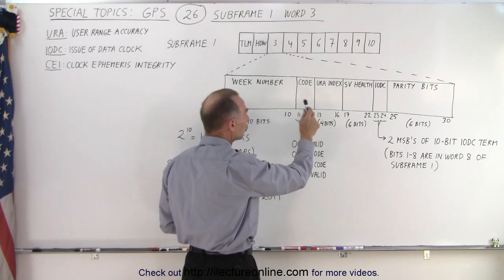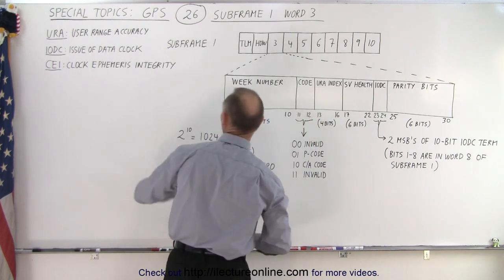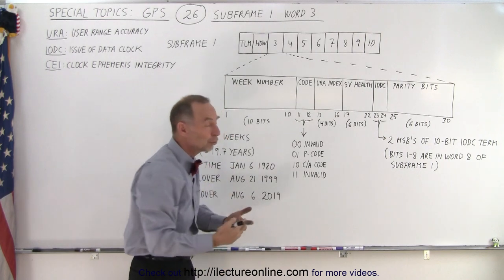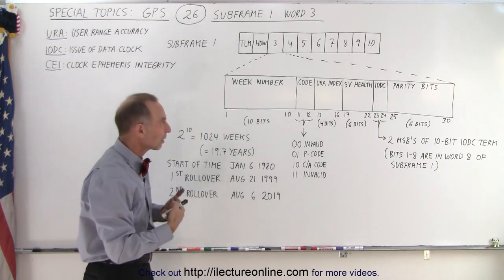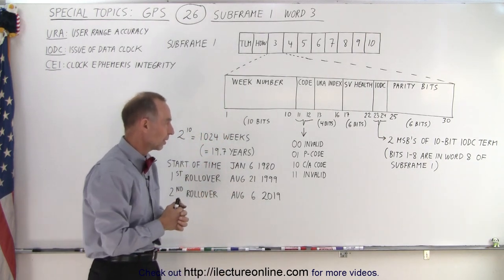Then the next four bits are the URA bits. URA stands for User Range Accuracy. It tells you how accurate we can expect this to be when we use this particular satellite.